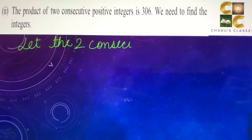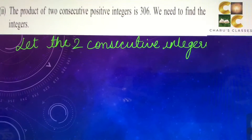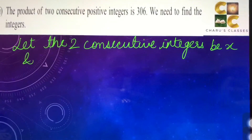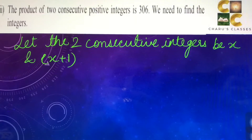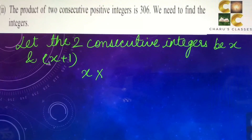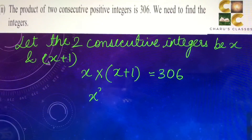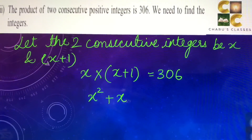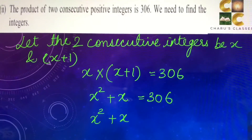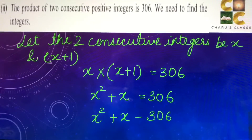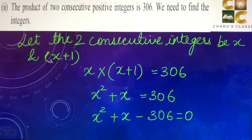Let the two consecutive integers be x and x + 1. It is given that their product is equal to 306, so x(x + 1) = 306, or x² + x = 306, which gives x² + x − 306 = 0. So this is the required quadratic equation.